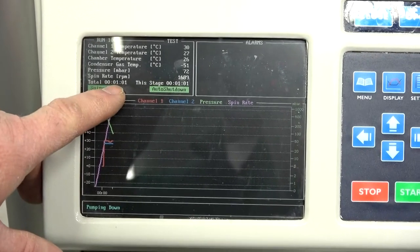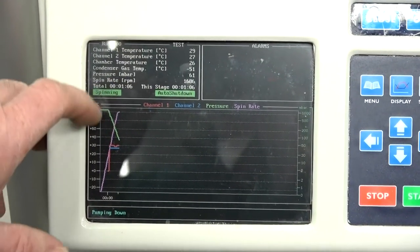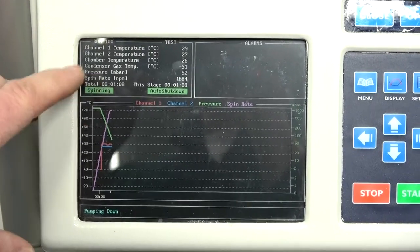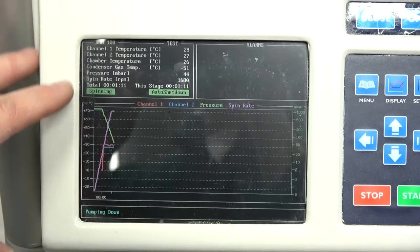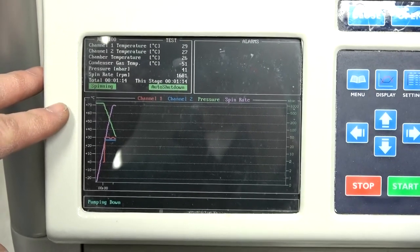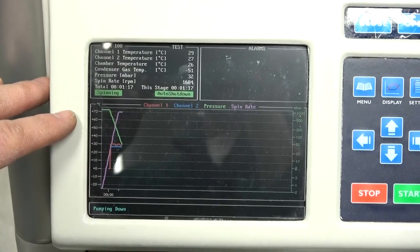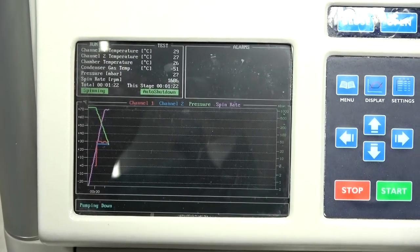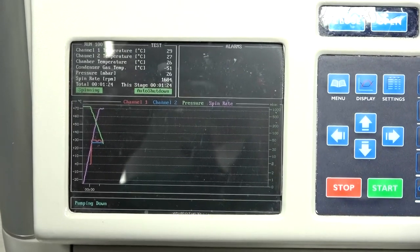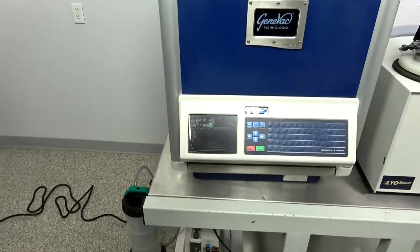This is programmed to run one hour. It's programmed to then shut down, run a defrost cycle, open up the drain, drain all the condenser, and then shut the drain and be ready for the next run. So it's a really nice option for those long runs that you can leave overnight. And you want to be able to come in in the morning and have everything ready to go to do another run.